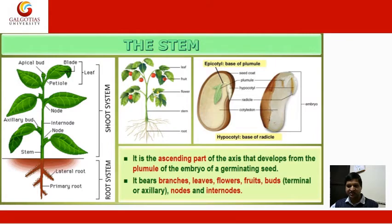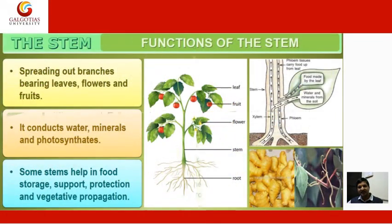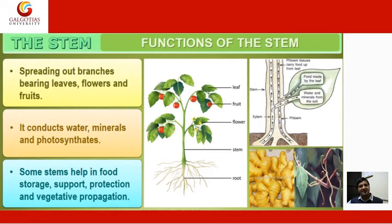Nodes are the regions of the stem where leaves are born. Inter-nodes are the portions between two nodes. Young stem is generally green and later often becomes woody and dark brown. Functions of the stem include spreading out branches, bearing leaves, flowers, and fruits; conducting water, minerals, and photosynthates; and some stems also help in food storage, support, protection, and vegetative propagation.